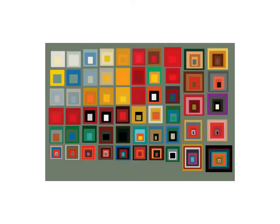So that was the scientific explanation of color. But how do artists use color? This is a work by Joseph Albers. He was an artist and educator who was really interested in how we perceive color. This is one of his studies on squares, and one of the things he was really interested in is how color changes our perception.